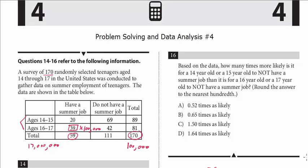We've got one more question, and it's number 16. Based on the data, how many times more likely is it for a 14-year-old or a 15-year-old not to have a summer job than it is for a 16-year-old or a 17-year-old not to have a summer job? Round the answer to the nearest hundredth. So we want to see how many more times likely it is for a 14- or a 15-year-old not to have a summer job. So let's figure out that ratio, a 14- or a 15-year-old.